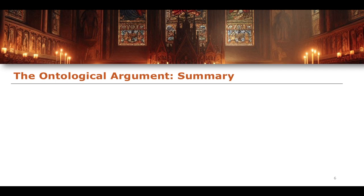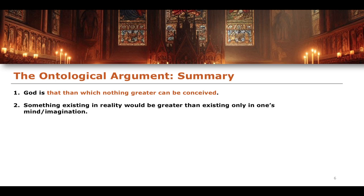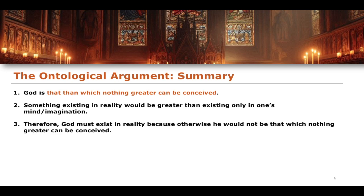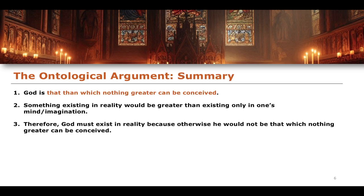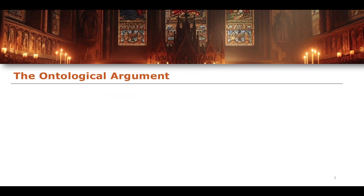To summarize: Premise one — God is that than which nothing greater can be conceived. Premise two — something that exists in reality is greater than something existing only in one's mind or imagination. Therefore, conclusion — God must exist in reality, because otherwise he would not be that than which nothing greater can be conceived. That is the ontological argument.